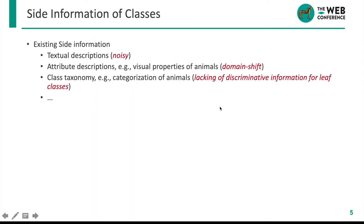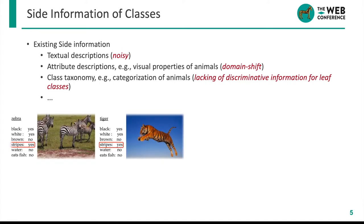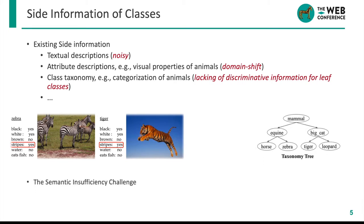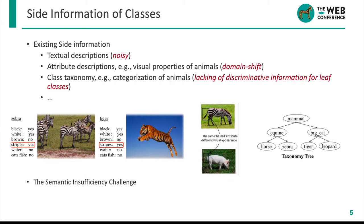In addition to textual descriptions, other side information includes attribute descriptions and class taxonomy. However, all of these side information are limited with incomplete semantics. For example, textual descriptions are always noisy, attribute descriptions suffer from the domain shift problem — where the same attribute may be very different in different classes, such as the tail attribute in horse and pig — while the class taxonomy tree often lacks discriminative semantics for leaf classes.